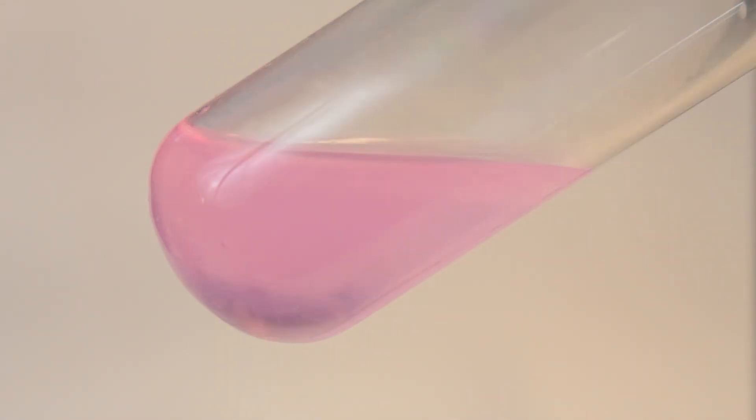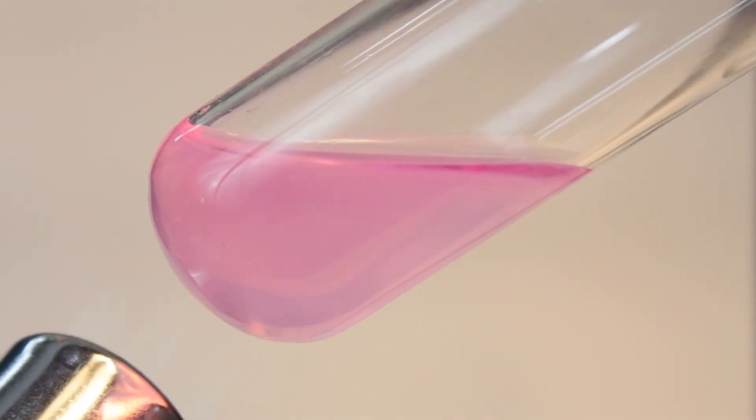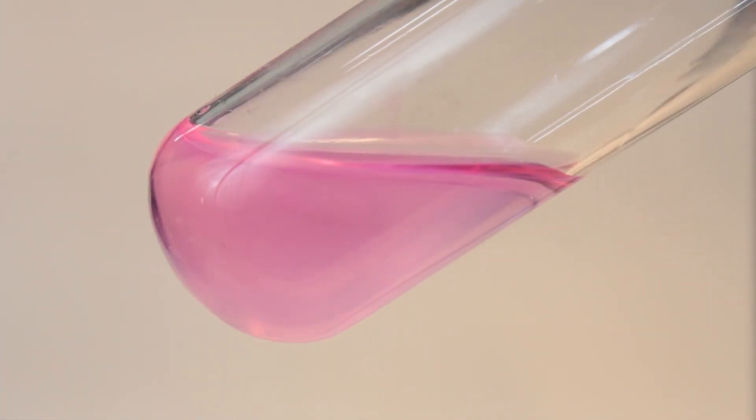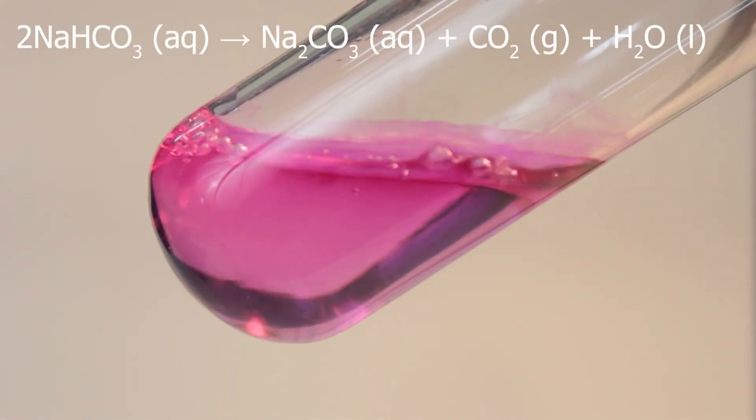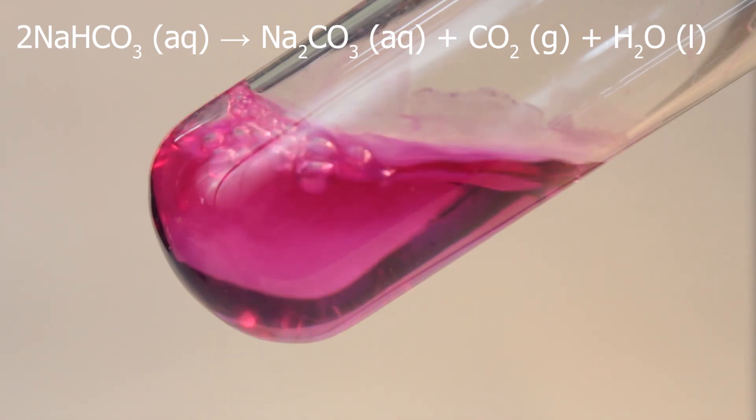And then let's heat it up. Production of carbonate, which is a strong alkaline, would drive pH up, causing the change of the color for the indicator.